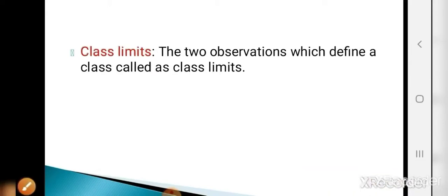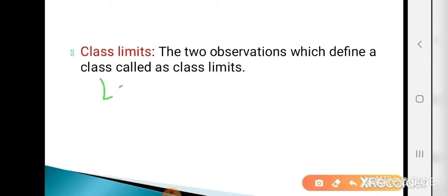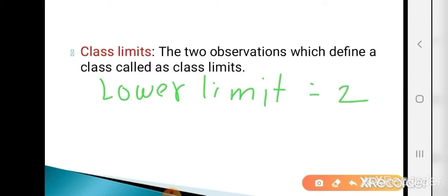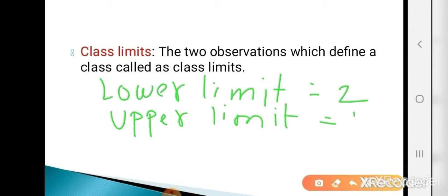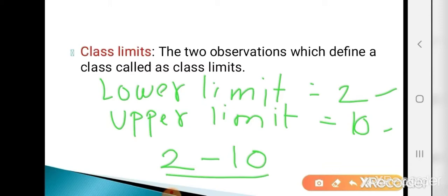Suppose for example, the lower limit is equal to 2 and upper limit is equal to 10. These two numbers are used to define a class, so 2 is the lower limit and 10 is the upper limit. These two numbers used to define a class are called class limits.